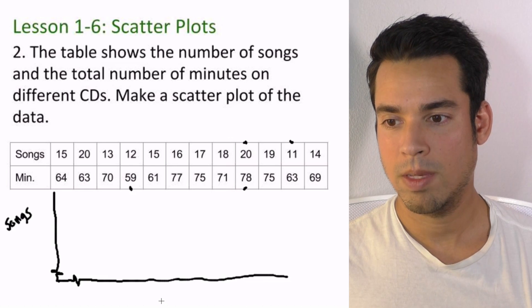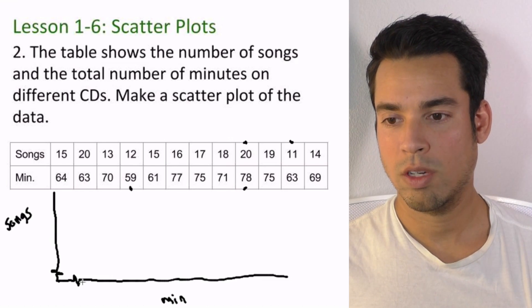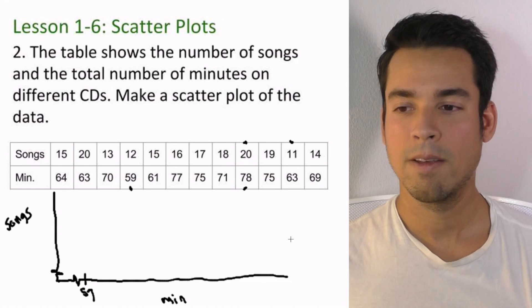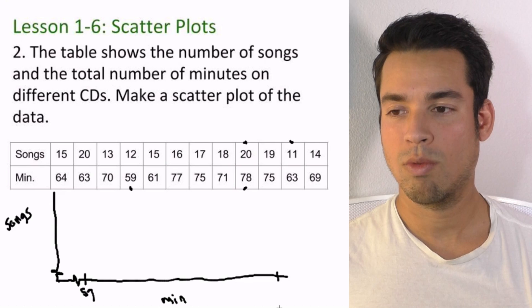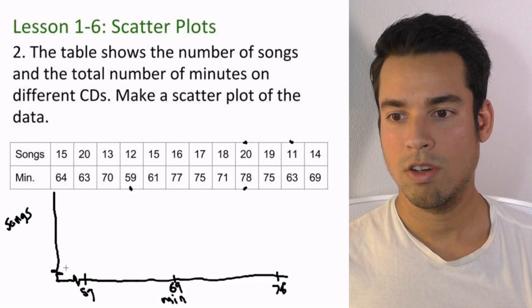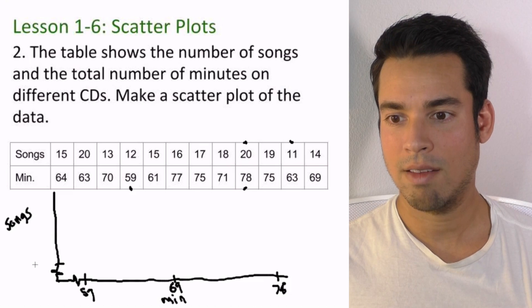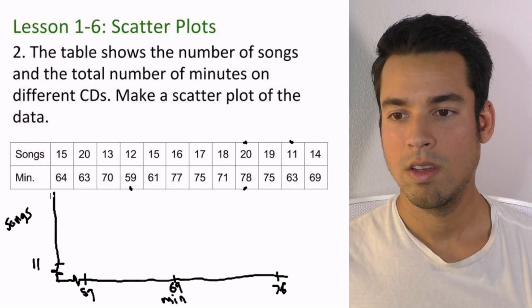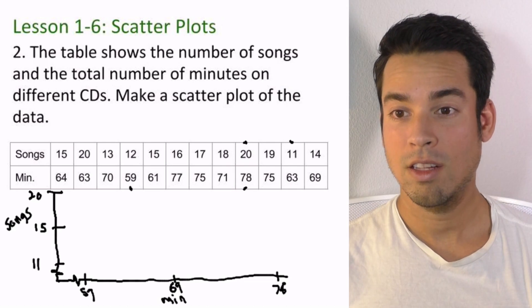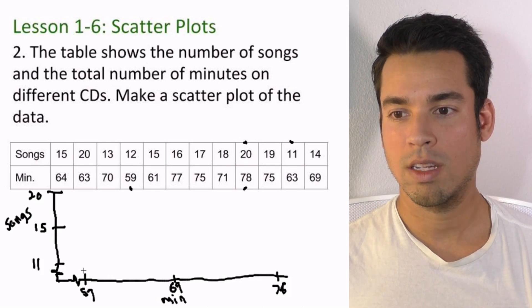Now we have songs over here and we have minutes down here. We're going to be at the very left for minutes, like we said, 59 like that, and all the way here on the right we've got 78. Maybe we've got 69 in the middle. Here our lowest value for songs is going to be up here, 11, at the very top we got 20, and in the middle we've got 15.